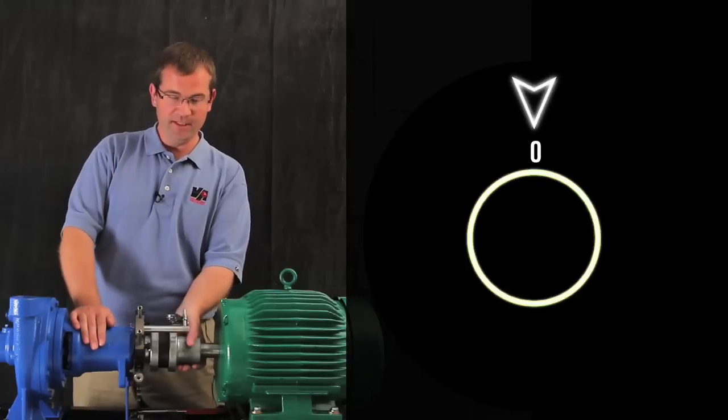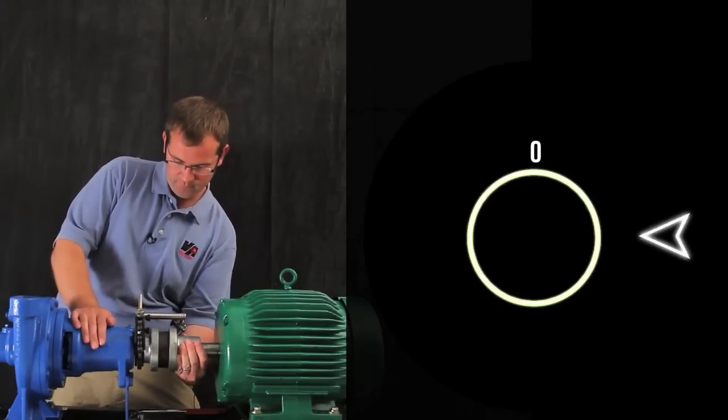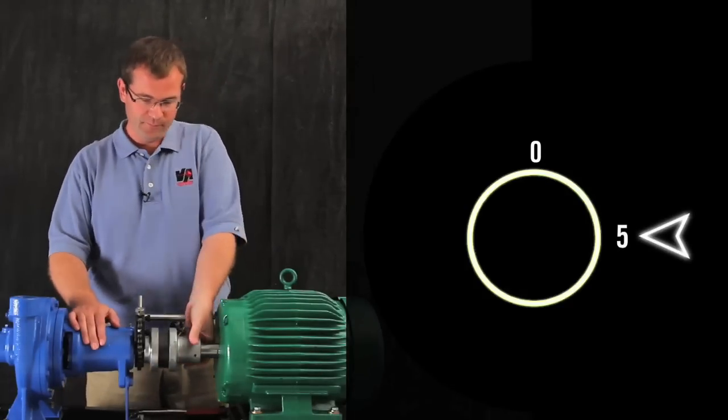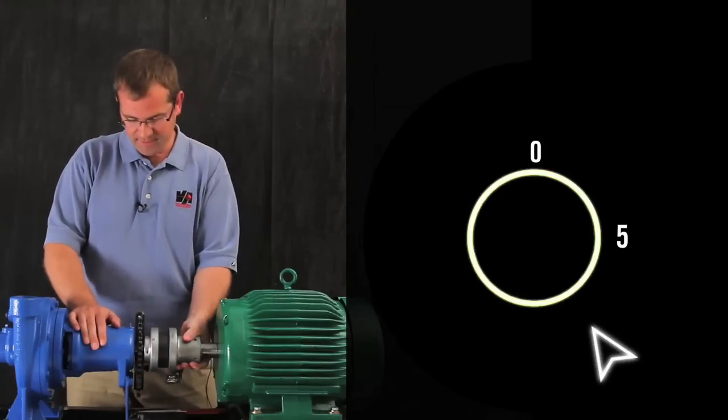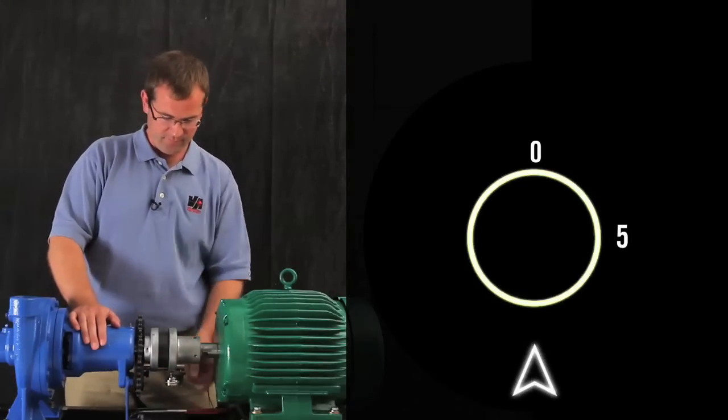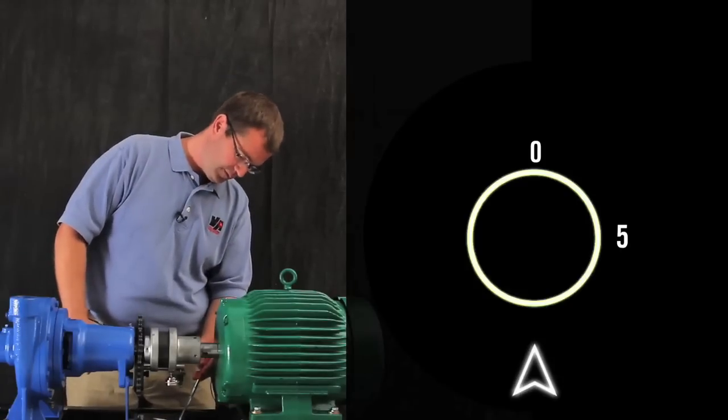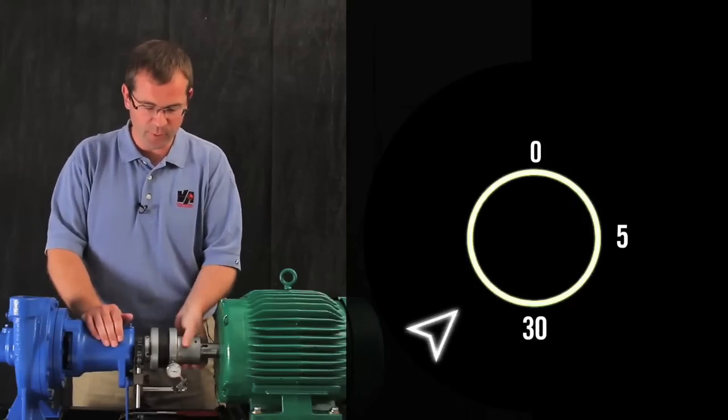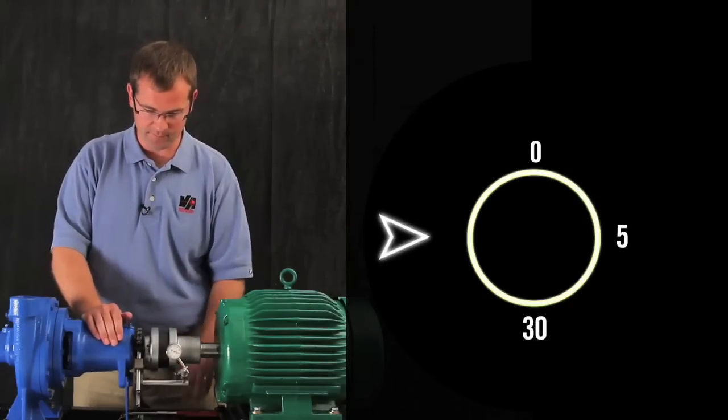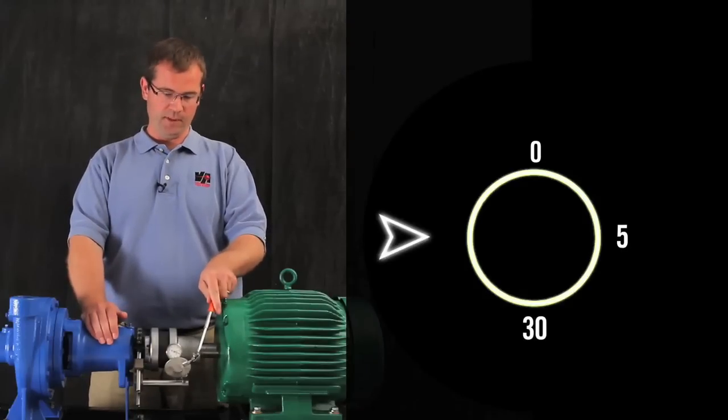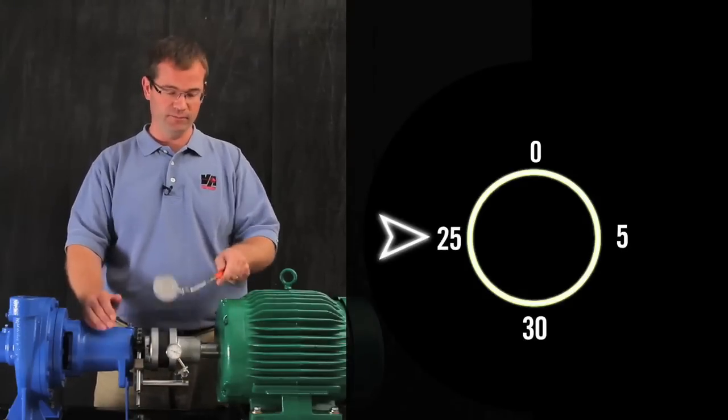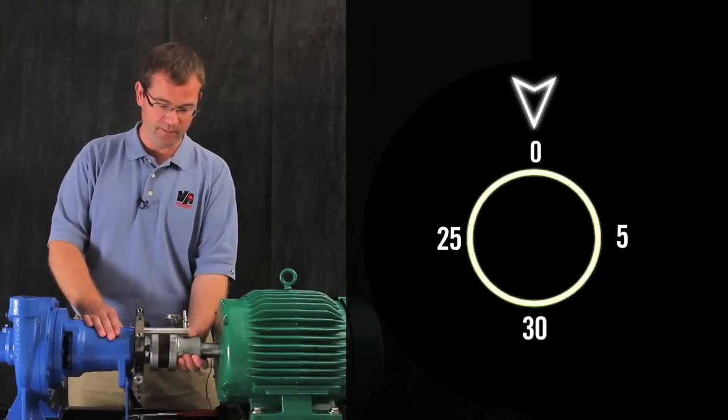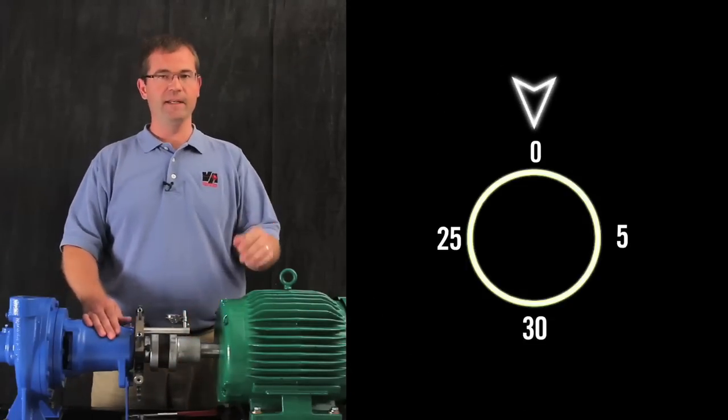First, let's get a reading at 3 o'clock. There, we have 5 mils. Now another 90 degrees down to 6 o'clock and that value is 30 mils. Next, we read at 9 o'clock and that reads 25 mils. And then back to 12 o'clock and the indicator comes back to zero.